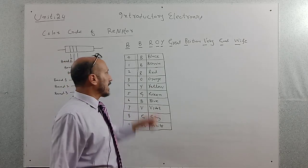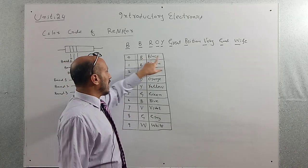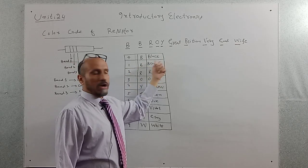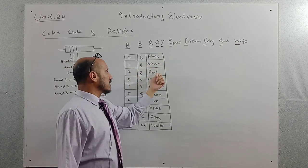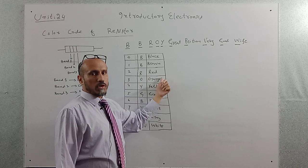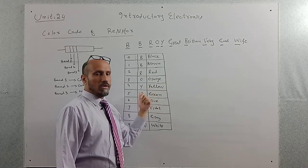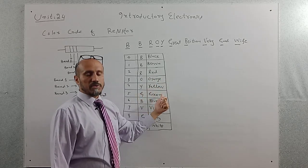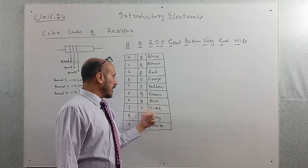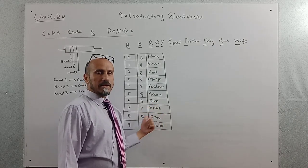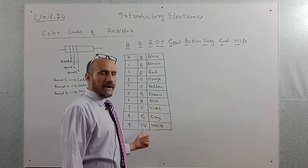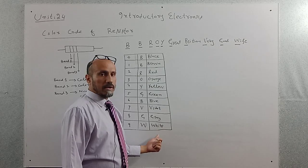Now the explanation of these colors: B stands for black, the other B stands for brown, R stands for red, O stands for orange, Y stands for yellow, G stands for green, B stands for blue, V stands for violet, G stands for gray, and the last one W stands for white.